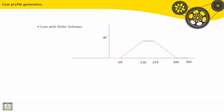Here we will see how to generate a cam profile for a radial cam or a radial follower cam. The motion of the follower is defined through this graph.